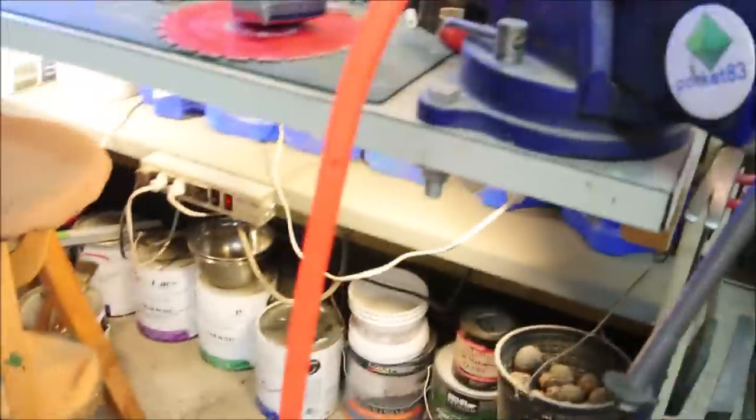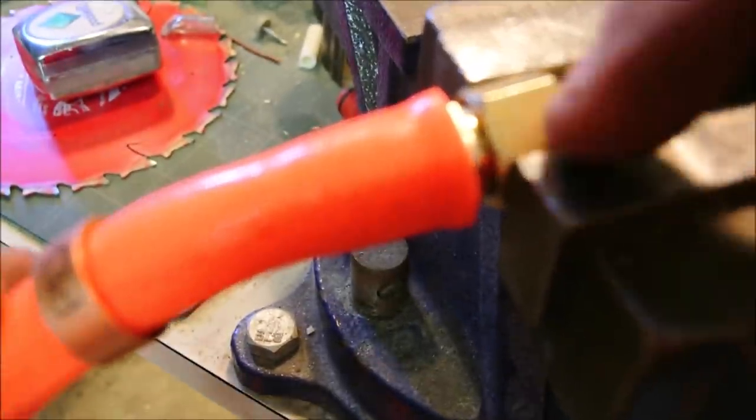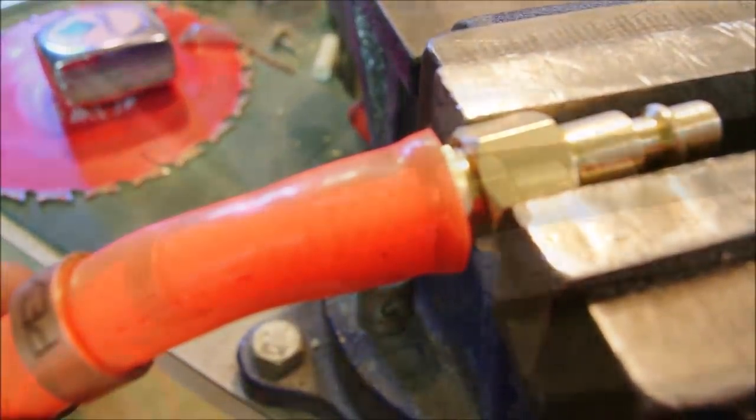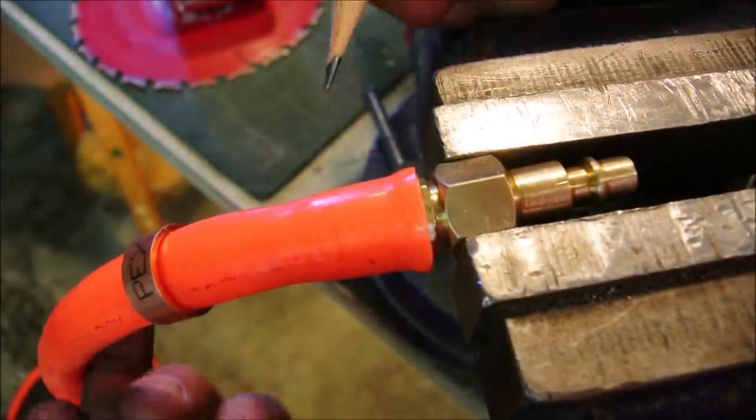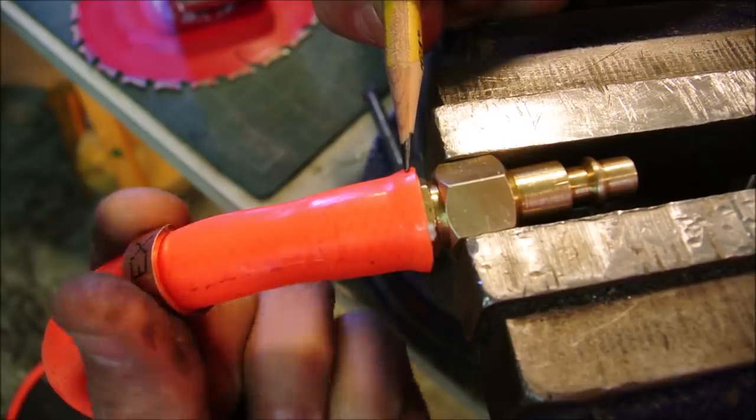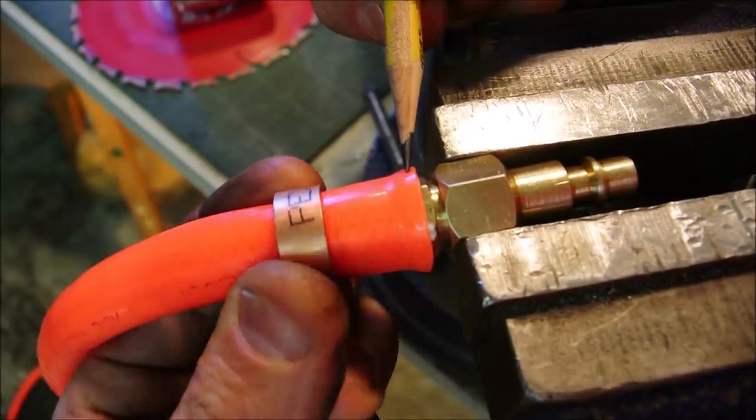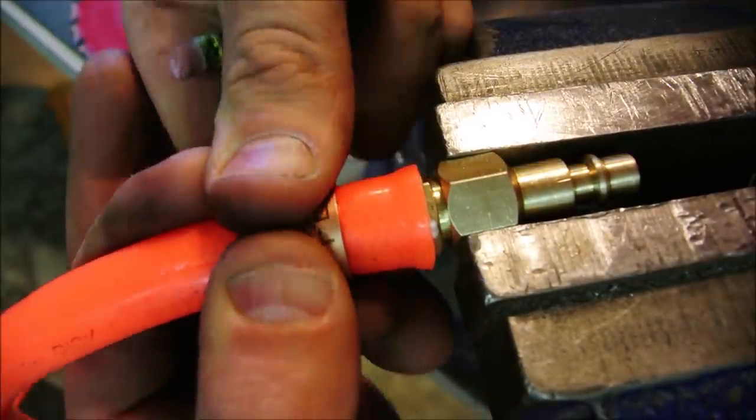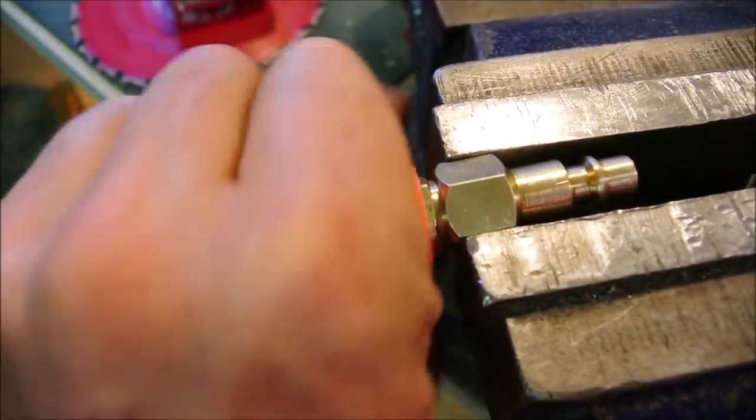So by putting it in the vise I was able to scrunch it all the way up to here, and I think this is going to make a great fit. Because of the way it starts to flare out over the end of the fitting like this, I really think it's going to stop it from ever coming back. The hose, that is.